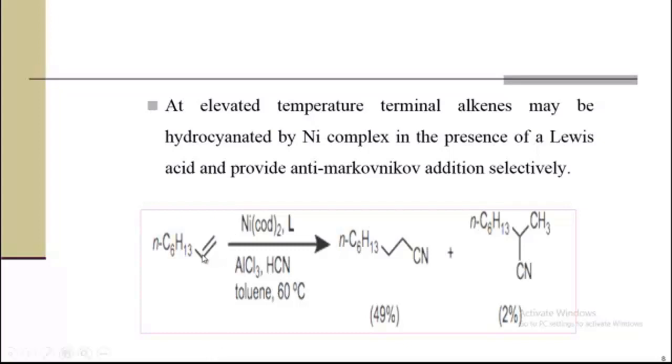Here we have alkyne. When we add HCN in the presence of aluminum chloride at 60 degrees centigrade, we will get majorly terminal alkyne as anti-Markovnikov product and only 2% Markovnikov product.